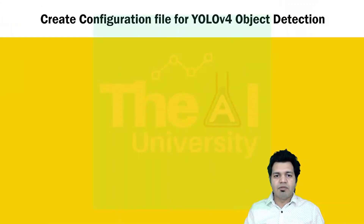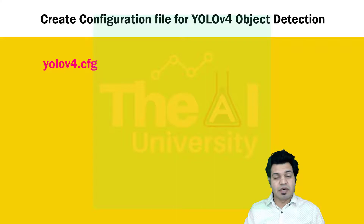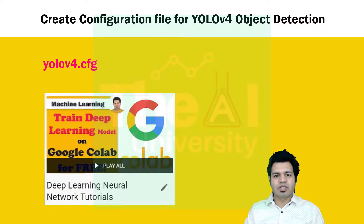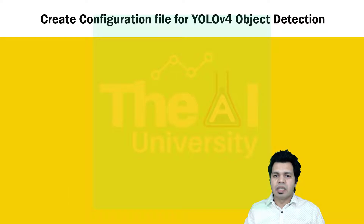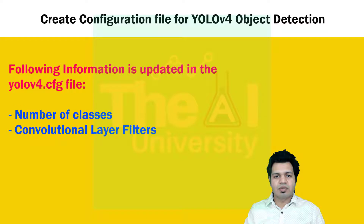The configuration file we are going to create will be named YOLOv4.cfg and will contain a lot of information. If you don't know about convolutional neural network concepts like strides or the significance of various CNN layers and filters, then watch this playlist. This configuration file will also contain three YOLO layers at the end that describe the architecture of YOLO. We generally update these layers with the number of classes and convolutional layer filters.